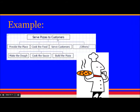Here is an example of a work breakdown structure. The whole thing is the WBS, and the lowest level of activities are called work packages. For example, 'serve pizzas to customers' might involve: provide the place, cook the food, serve the customer. Cooking the food can be further divided into more manageable work packages: make the dough, cook the sauce, build the pizza.